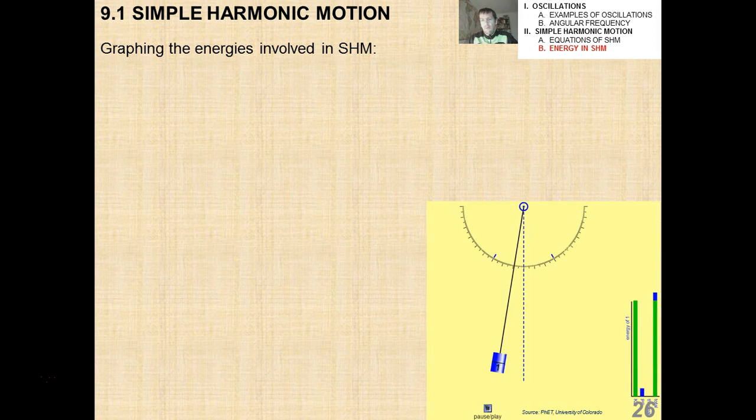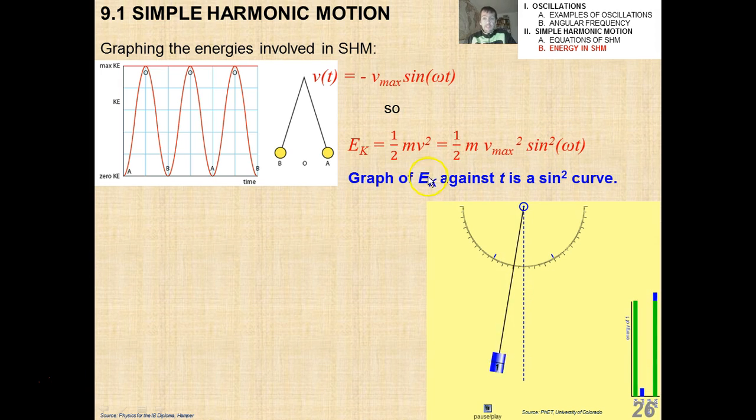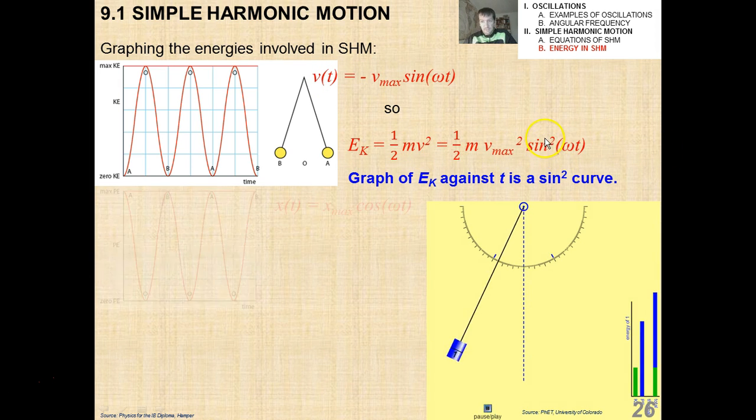Now if we want to graph the energies involved in simple harmonic motion, remember with a pendulum it's constantly give and take between the kinetic and the potential where the total energy stays the same. We've seen this graph before and played around with the PhET simulation. Now if I want to graph the kinetic energy as a function of time, it's a sinusoidal function. It looks sinusoidal, but it never goes negative because kinetic energy can never be negative because it's a v squared term. And in this case, I have that v of t is negative v max times the sine omega t. So the graph of the kinetic energy against time is a sine squared curve because of this one half mv squared. And if I put v of t in for that v squared, it's a sine squared curve.